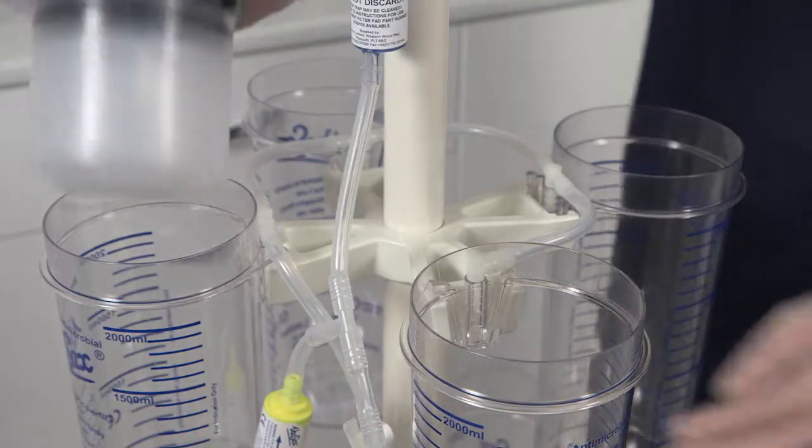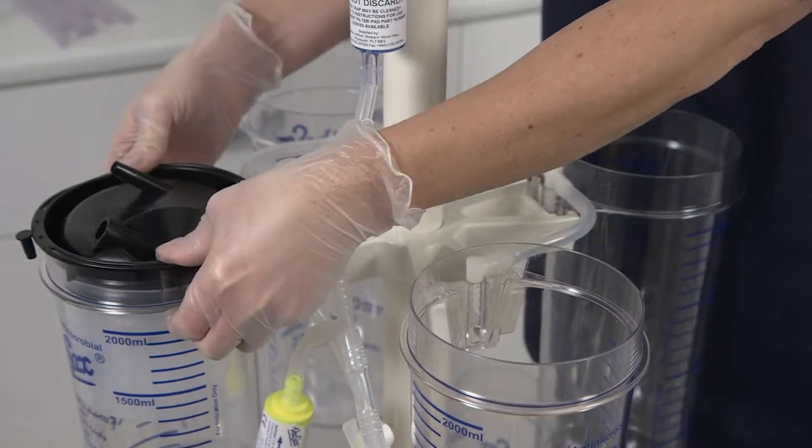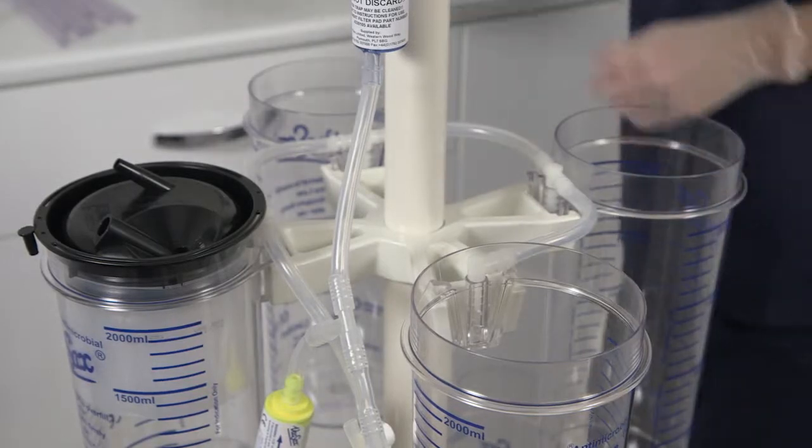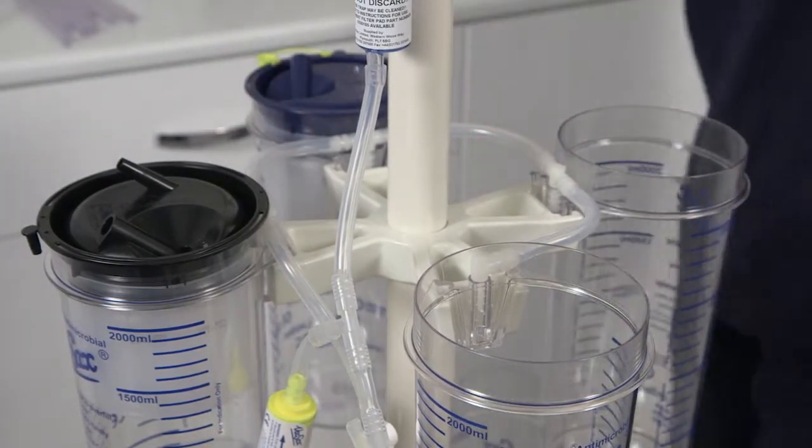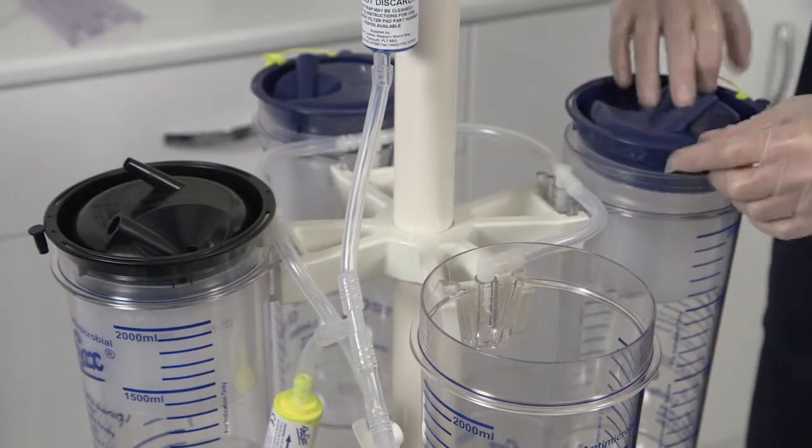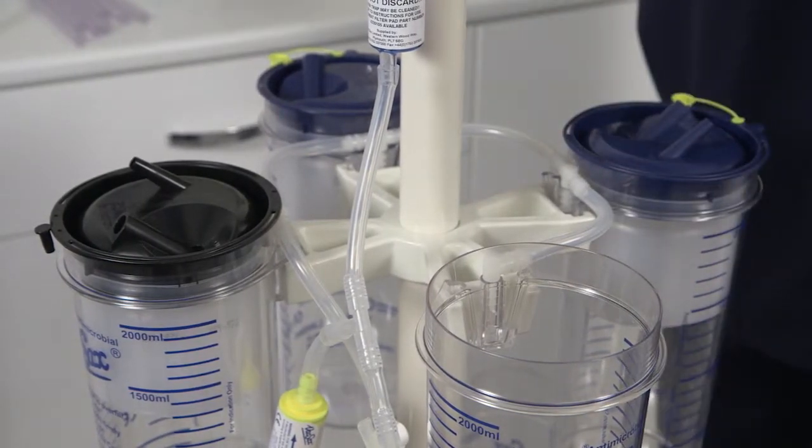The first liner to be put in position is the black lid standard liner which is placed to the left of the suction controller. Then place the remaining three blue lid cascade liners into position pushing them down into the canisters firmly.